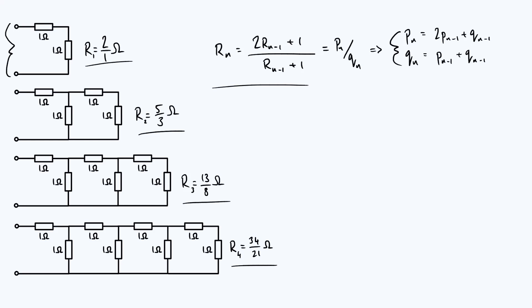Then you substitute Pn and Qn in place of Rn, and Pn minus 1 and Qn minus 1 in place of these Rn minus 1s, multiply the top and bottom of the fraction by Qn minus 1, and equate the numerators and the denominators of both sides, and you get these two coupled linear recurrence relations for Pn and Qn.